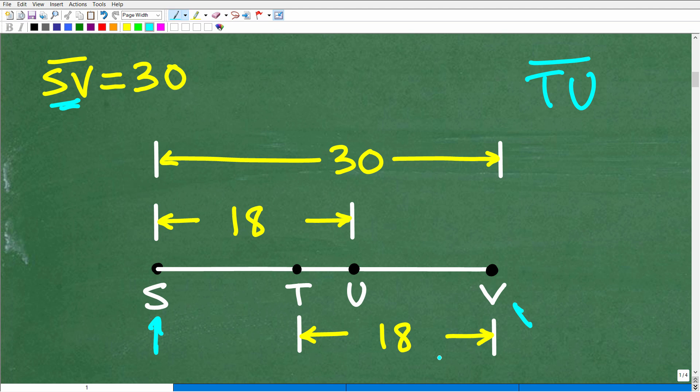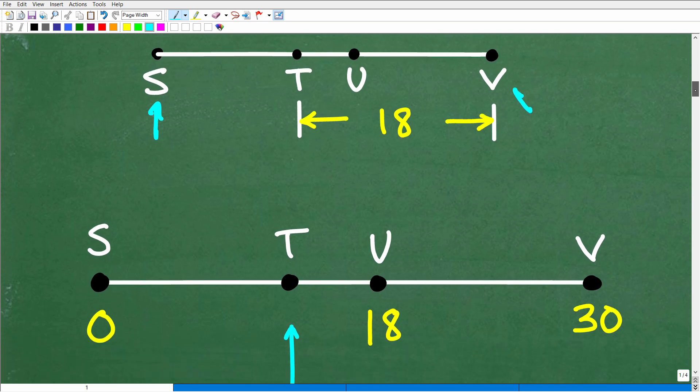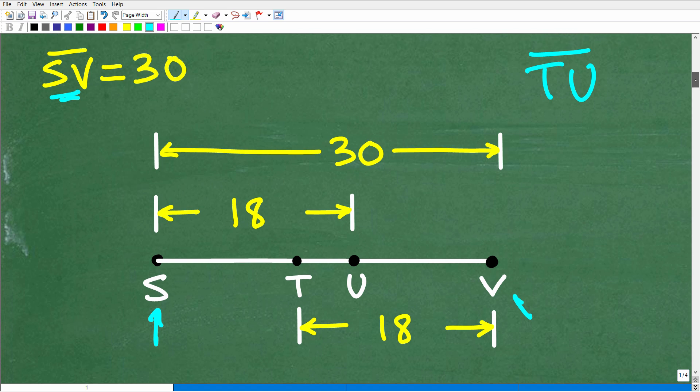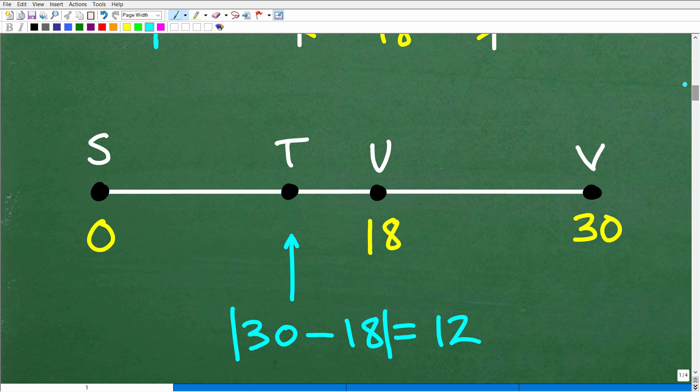So how can we approach this problem? Well, the graph right here might be a little bit confusing. What we can do is take this and kind of put this information on a similar graph, but one that's going to be more useful to us. So let's start with point S being zero as an endpoint. And we know that SV, the entire length of this thing, SV is 30. So if S is zero, V is at 30. So let's kind of go down here, and we can see that. So S would be at zero. You can think of just this as a basic number line, V at 30.